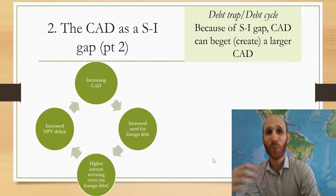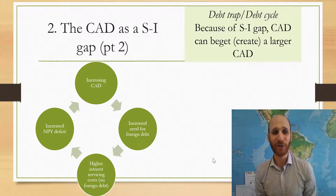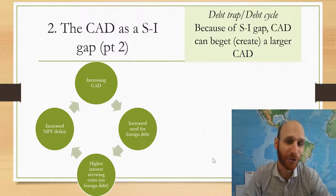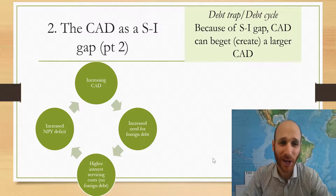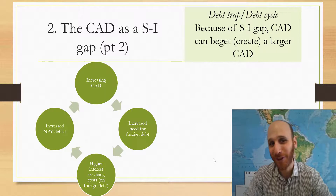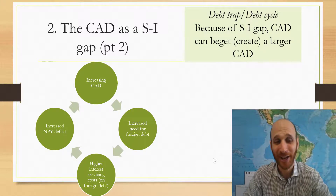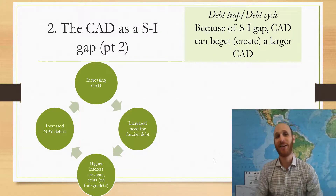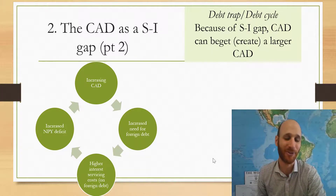When we increase foreign borrowings, that's going to increase the interest servicing costs. If there are higher interest servicing costs, that will increase the NPY deficit. And if we've got a higher NPY deficit, there is a higher current account deficit.